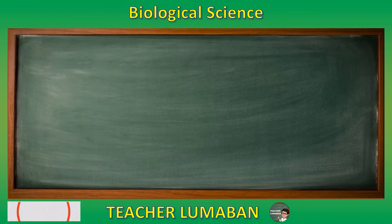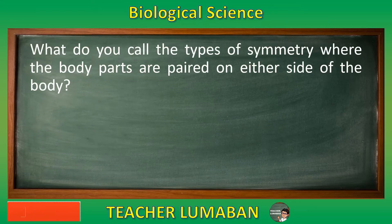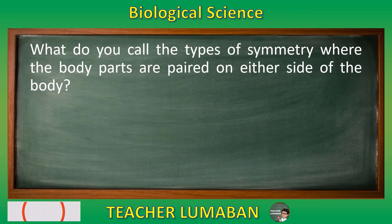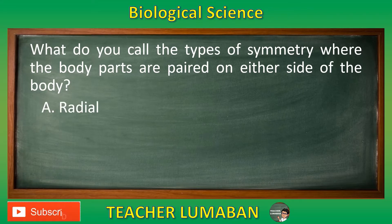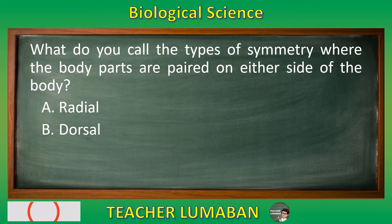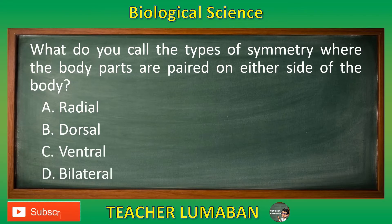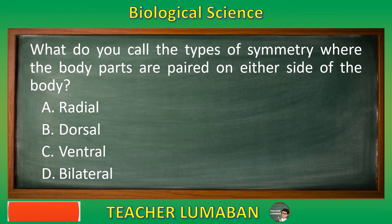What do you call the type of symmetry where the body parts are paired on either side of the body? Letter A: Radial. Letter B: Dorsal. Letter C: Ventral. Letter D: Bilateral. Choose the suitable answer based on the given choices in 5 seconds.